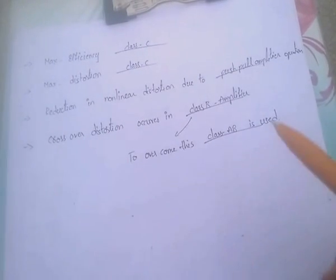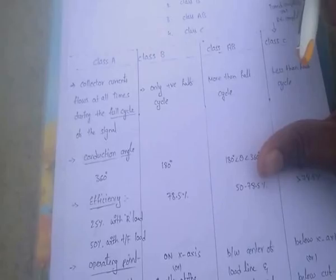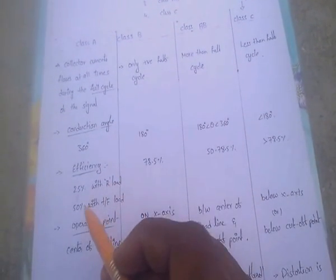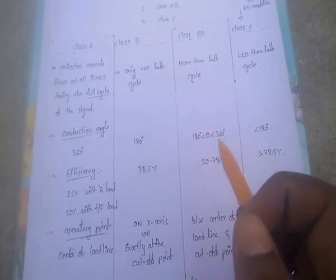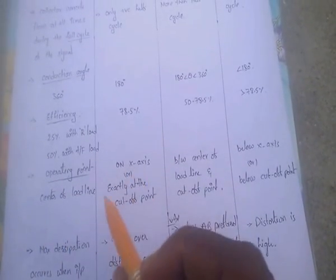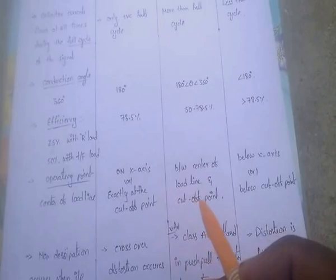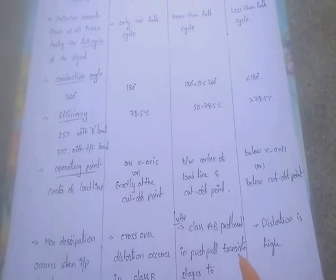To summarize: collector current flows full cycle in Class A, only half cycle in Class B, more than half cycle in Class AB, and less than half cycle in Class C. Conduction angles are 360°, 180°, 180–360°, and less than 180° respectively. Efficiencies are 25% / 50%, 78.5%, 50–78.5%, and greater than 78.5%. Crossover distortion in Class B is overcome by using Class AB. Thank you — in the next video I will discuss the remaining parts of electronic devices and circuits.